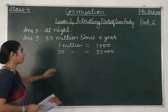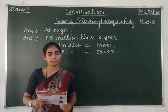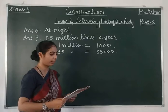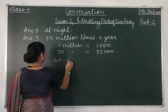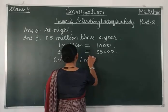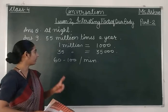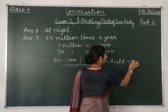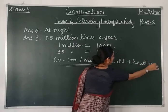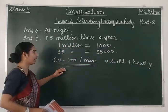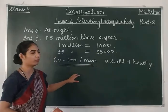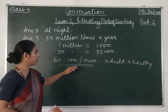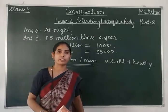But if we express it per minute — because that's what doctors usually check — our answer will be 60 to 100 beats per minute for a healthy adult. Usually around 72 beats per minute, but the normal range is 60 to 100 per minute. If someone is a heart patient, their heart beat may be lower.